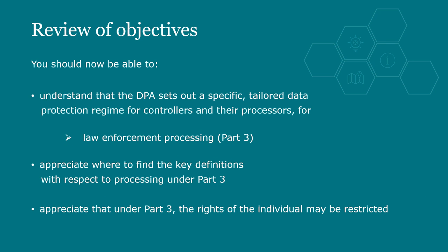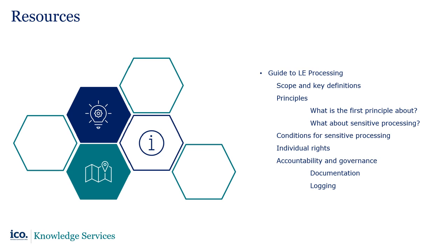You have now completed Session 1 of Module 12 and should now be able to understand that the DPA sets out a specific tailored data protection regime for controllers and their processors for law enforcement processing; appreciate where to find the key definitions with respect to processing under Part 3; and appreciate that under Part 3 the rights of the individual may be restricted. There is further information on these topics in our guidance on our website and you will find the relevant links in your notes. Please now go on to complete Session 2 of Module 12, which covers Intelligence Services Processing under Part 4 of the DPA. Thank you for listening.